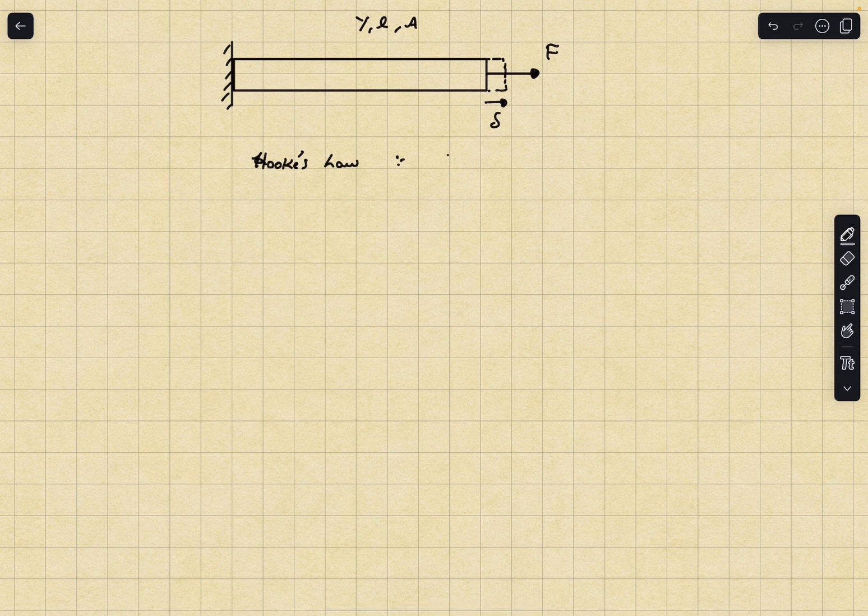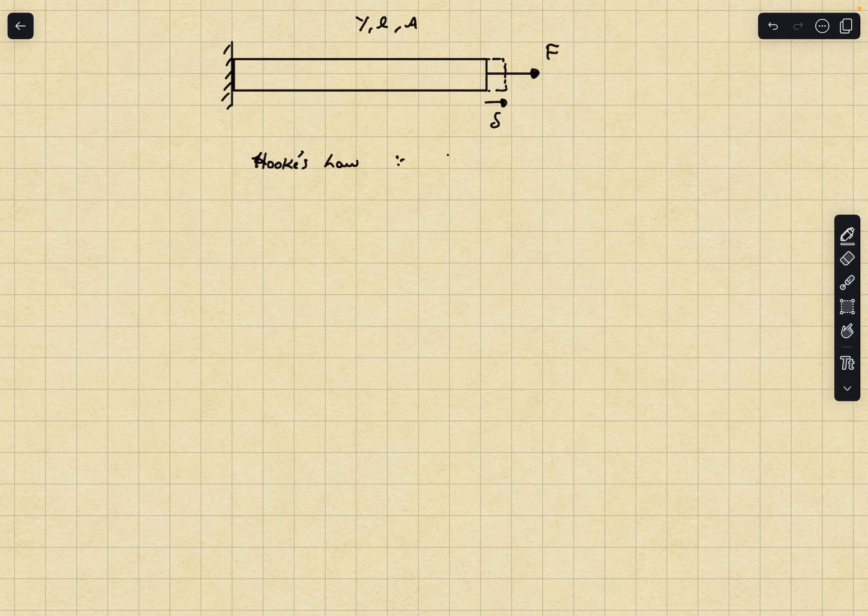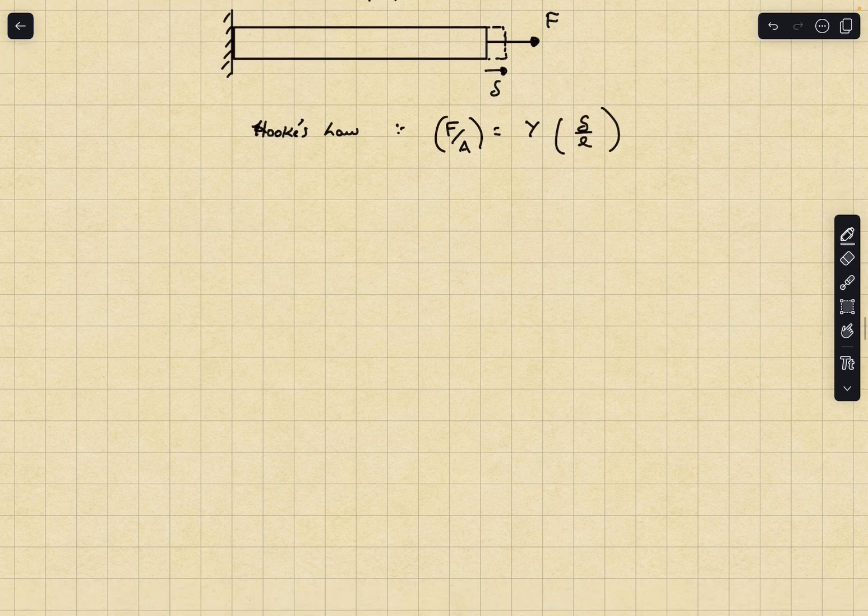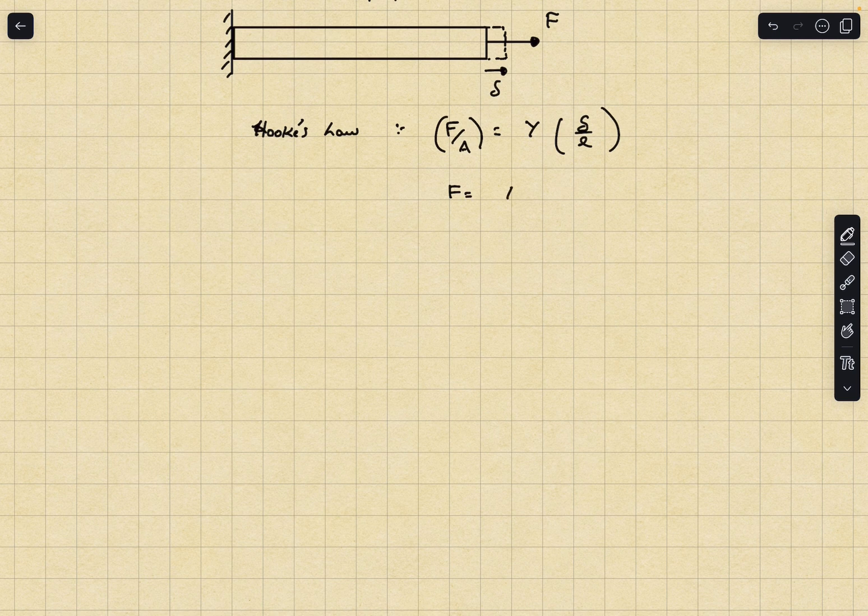By using Hooke's law, as this is an elastic material within elastic limits we can apply Hooke's law here. The internal stress that acts as a result of this axial force F which is F divided by A is equal to the Young's modulus Y times the strain. The strain is the change in length by the original length which would be delta divided by L. From here if I rearrange the terms I get the force expression as YA by L times delta.